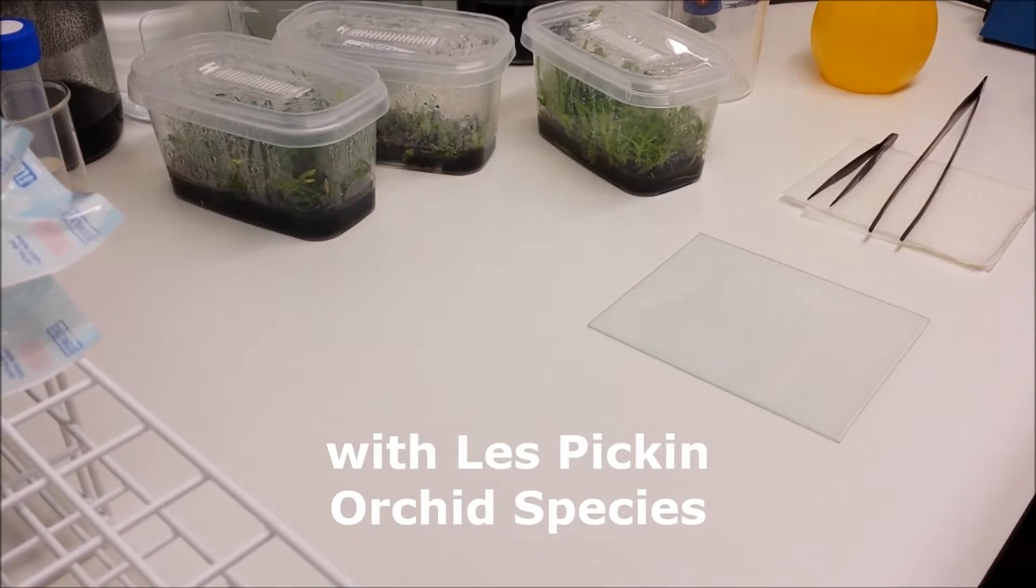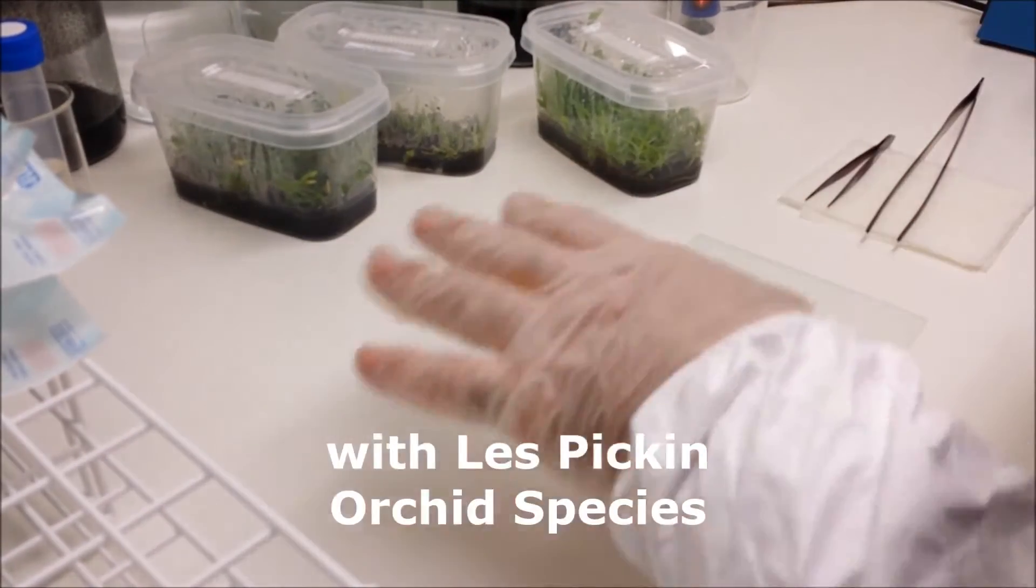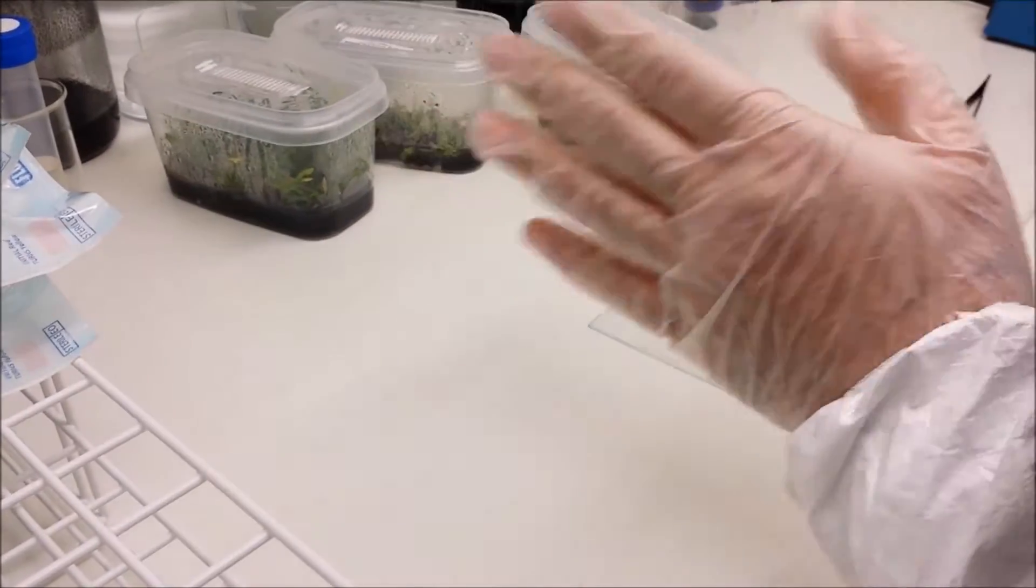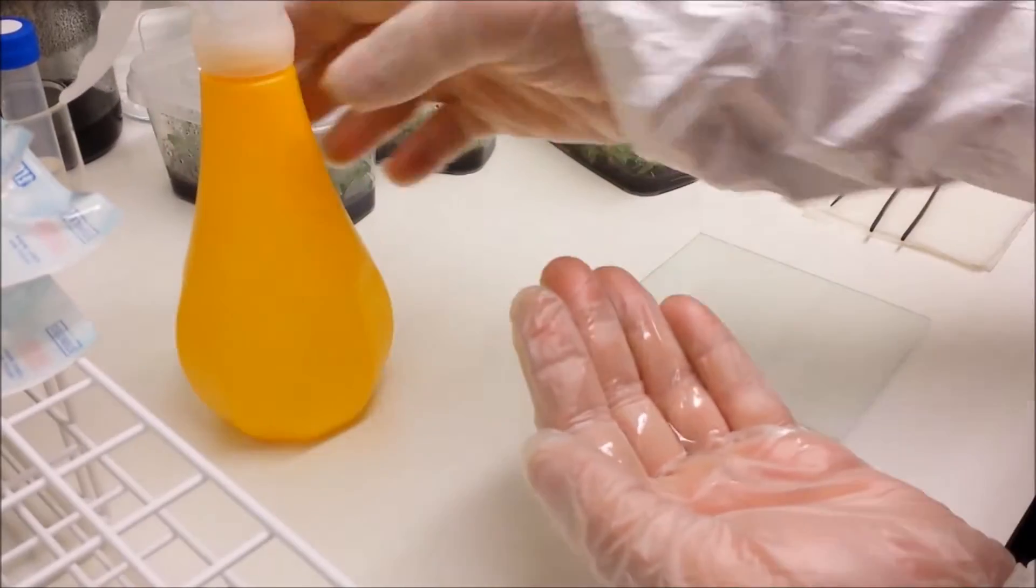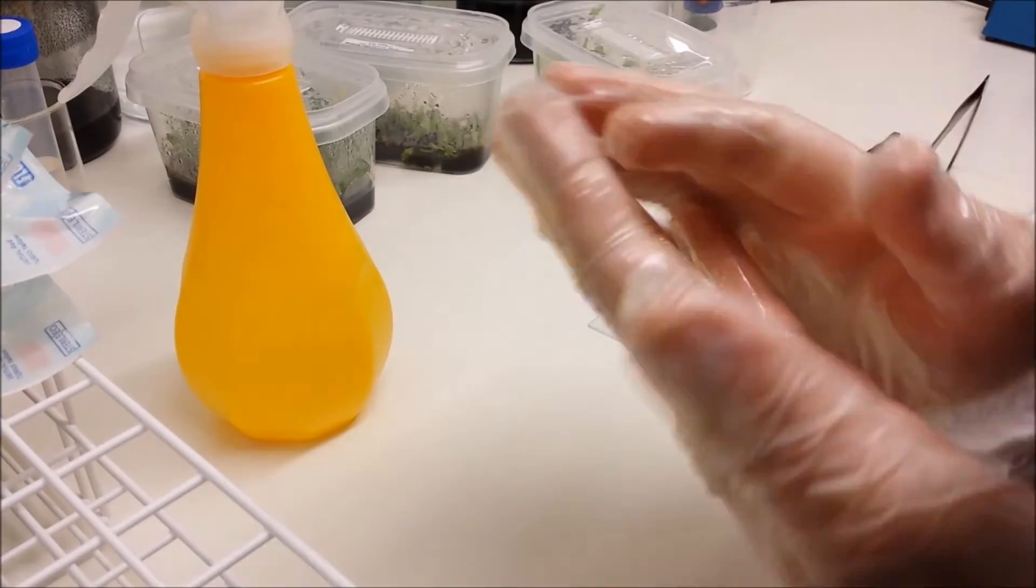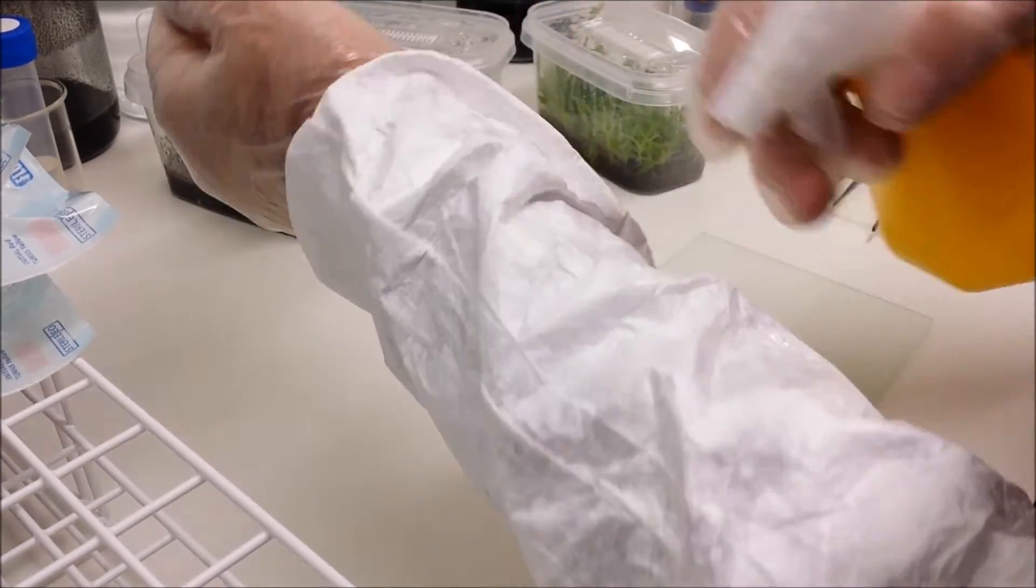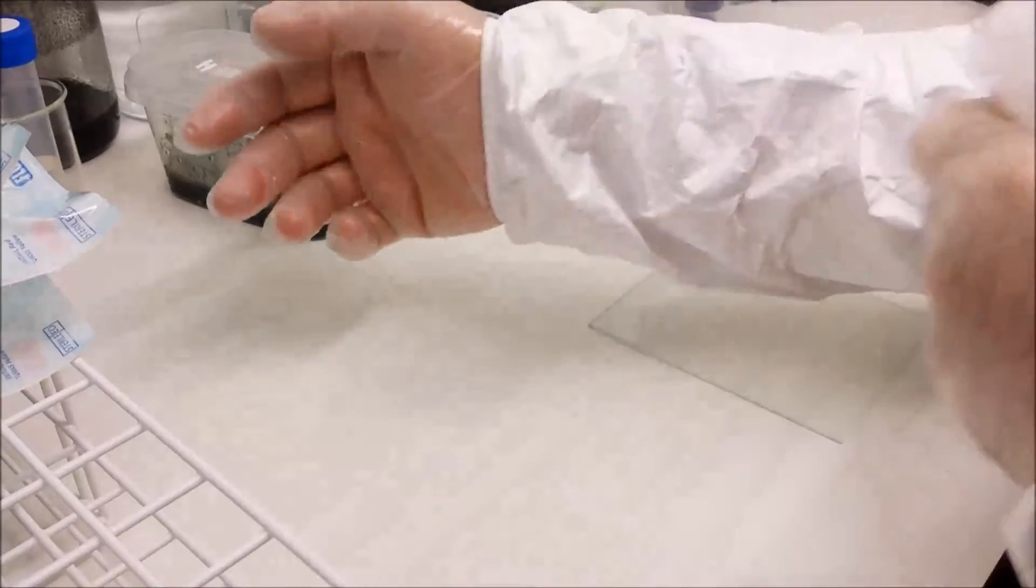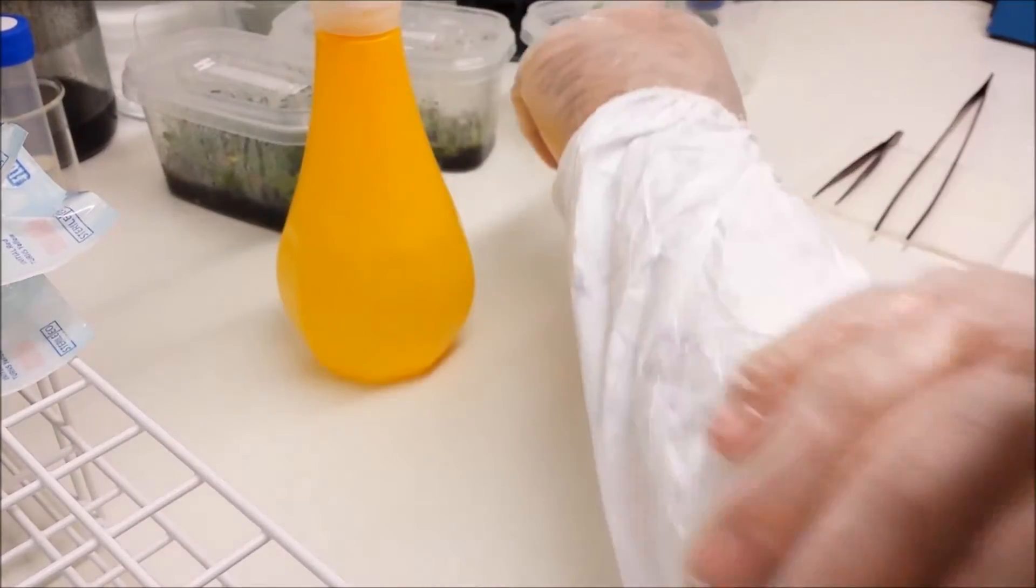Good afternoon folks, it's Les from Orchid Species. The first thing I'm doing today is I'm going to remind you that you should spray your hands with isopropyl alcohol, as well as the work surfaces, utensils and any equipment that's inside your sterile area. As you can see I'm wearing some surgical gloves, I'm also wearing some arm covers because I've got quite hairy arms and I'm spraying those with isopropyl alcohol.